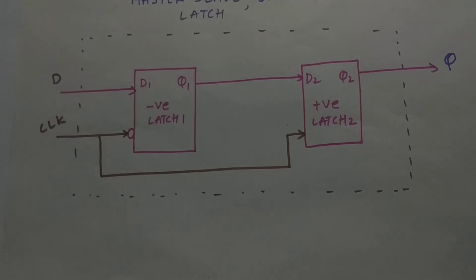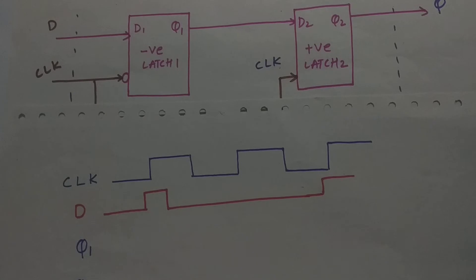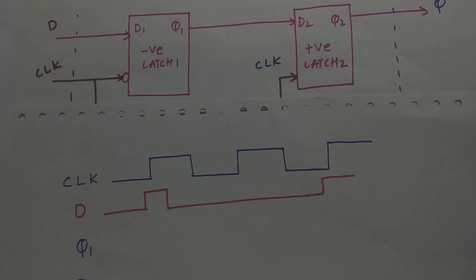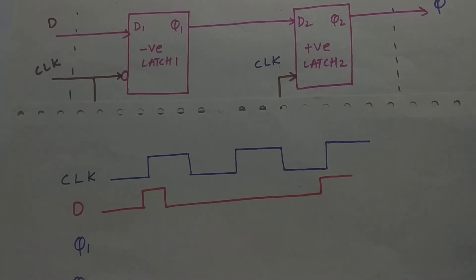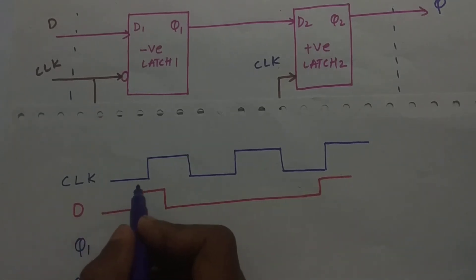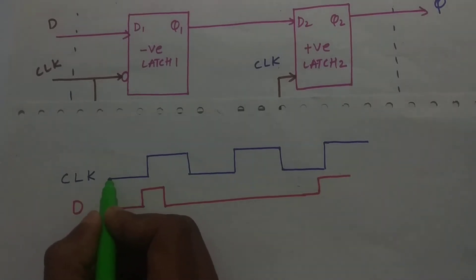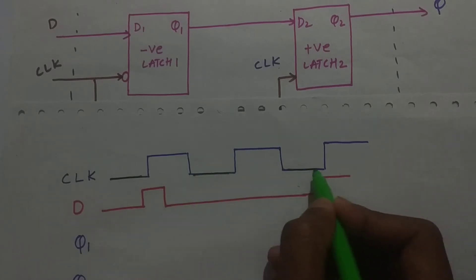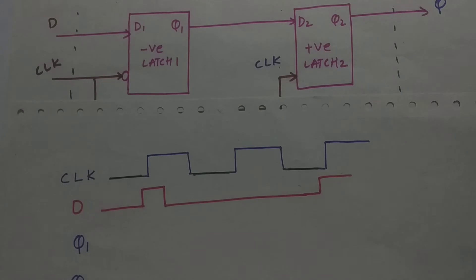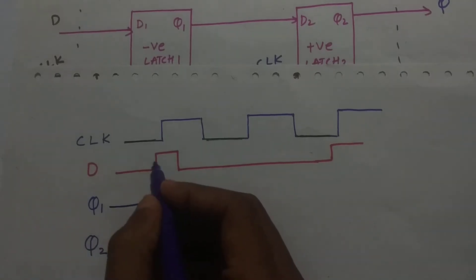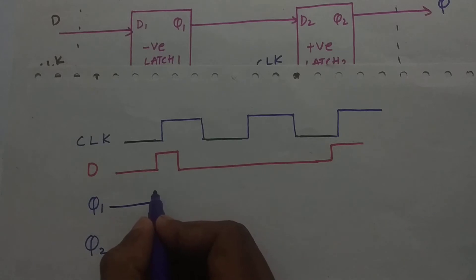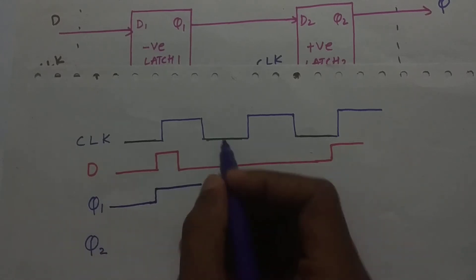Let us look at the timing diagram and understand clearly. I have taken a clock of 50% duty cycle and given the input D as shown in red color. Now let us draw the waveform for Q1. Since it's a negative latch, it will be transparent whenever there is a negative level of the clock. So at these windows, Q1 — that is latch one — will be transparent. As you can see, this part is lying in the negative region, so this will be there and it will continue to the next negative region.